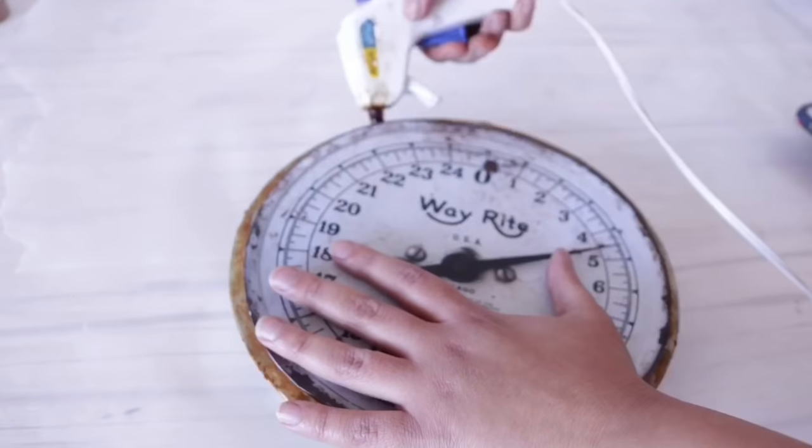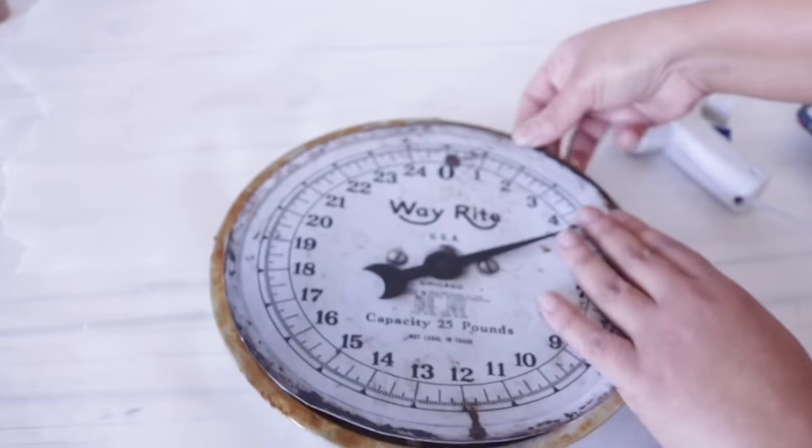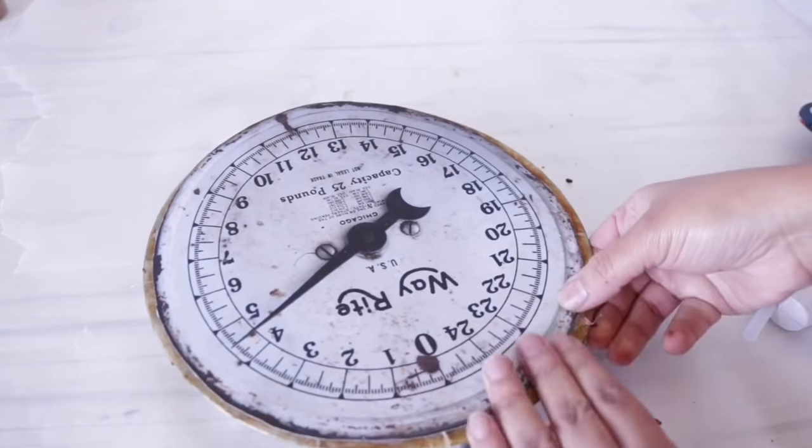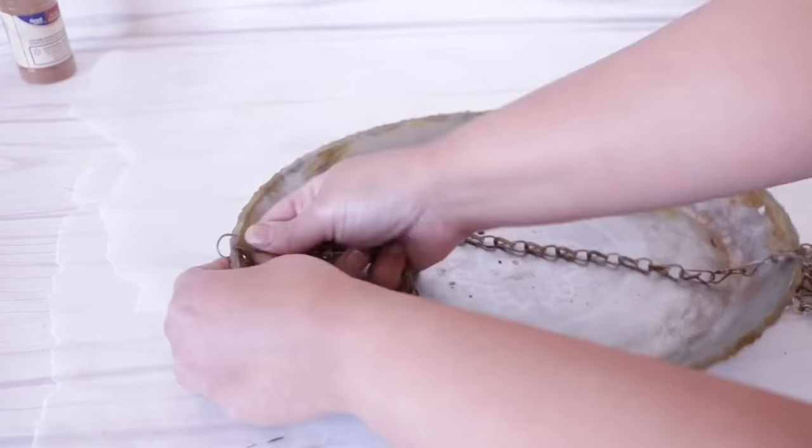But of course you can use Mod Podge or super glue, whatever glue you feel comfortable using. Just make sure that you get all of the edges down because if you leave any gaps, it's going to be really apparent that this is fake.